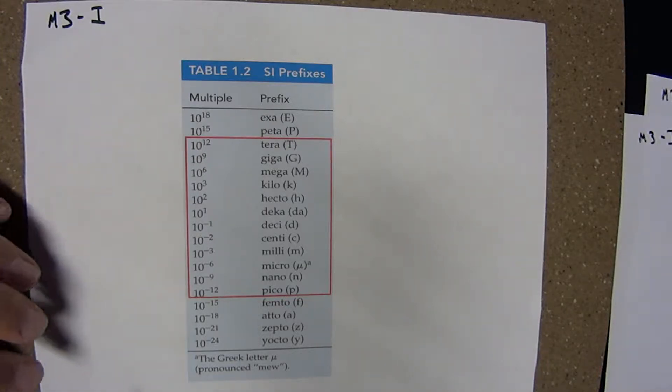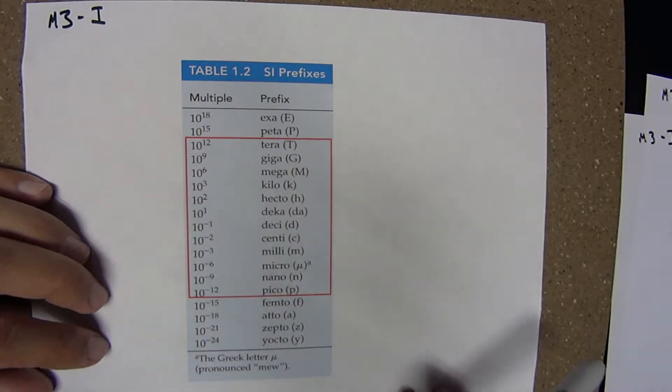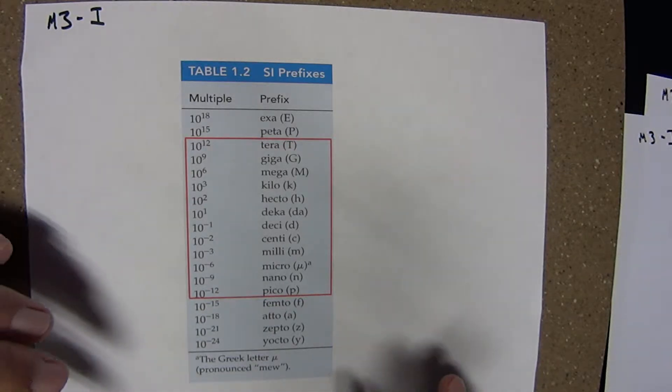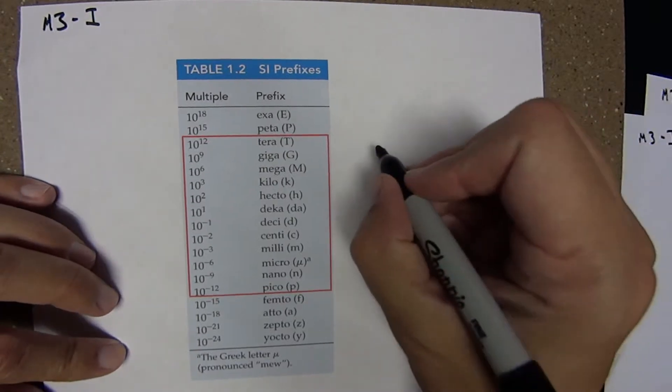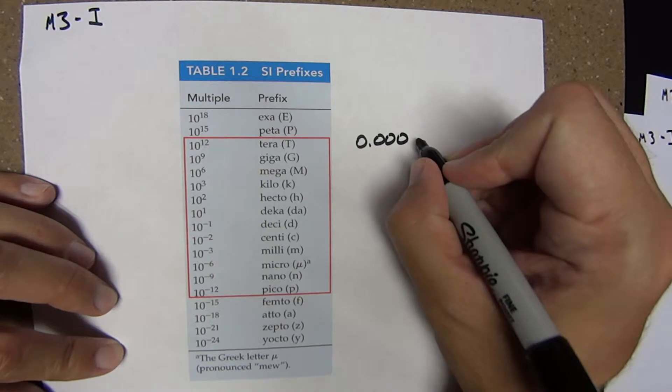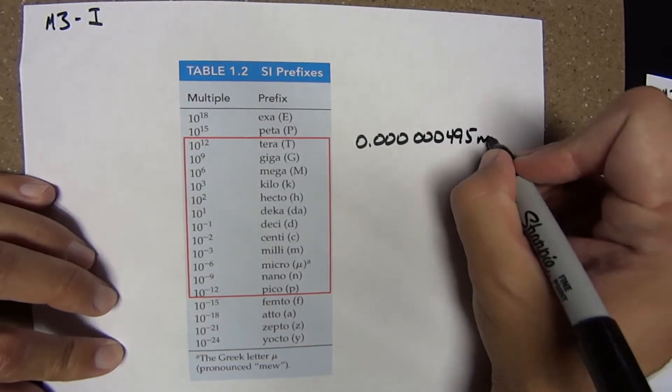You should know the multiple and prefix symbol for at least those within this red box. These prefixes are often used for convenience. For example, the wavelength of a visible photon might be expressed as 0.000000495 meters.